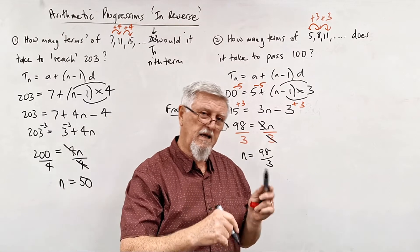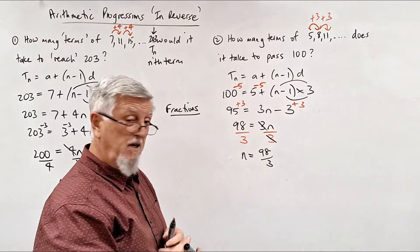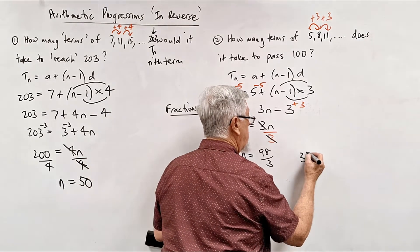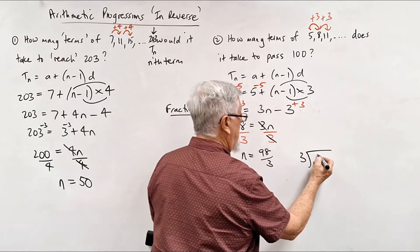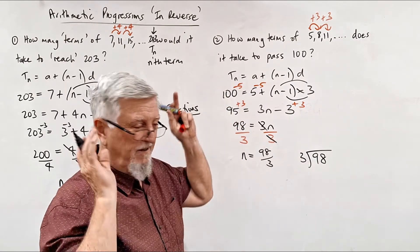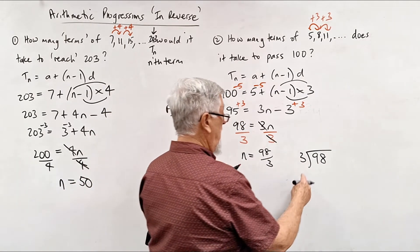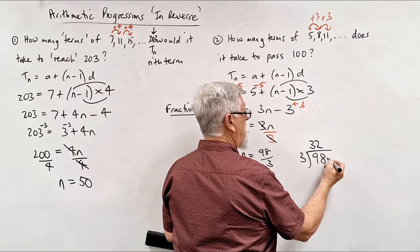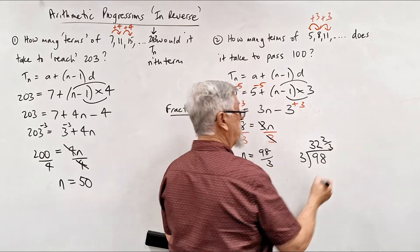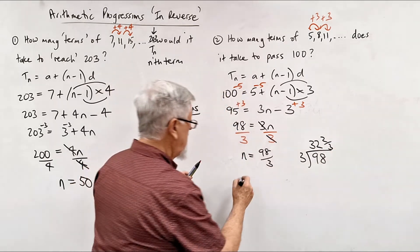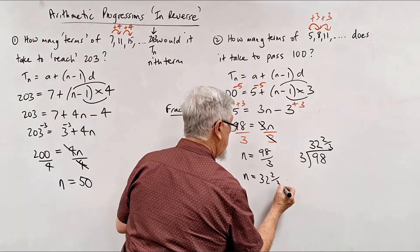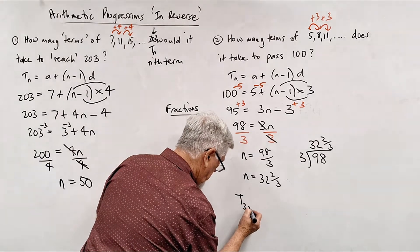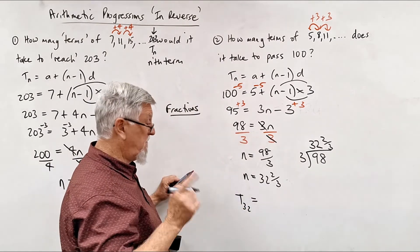This can come up in the non-calculator section in Western Australia and other states, so you need to be able to do this without a calculator. It's surprising how many people can't do 98 ÷ 3 by hand. 3 into 9 goes 3; 3 into 8 goes twice with 2 left over — that's two thirds. So n = 32⅔.